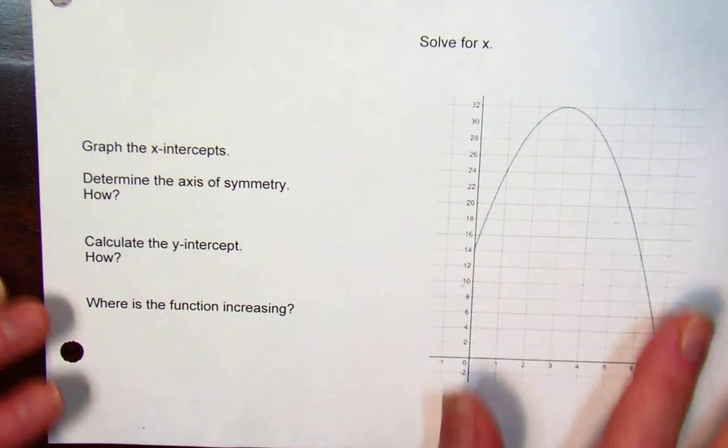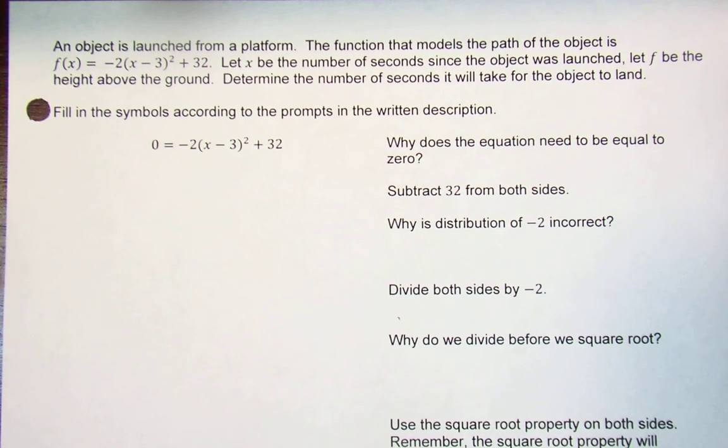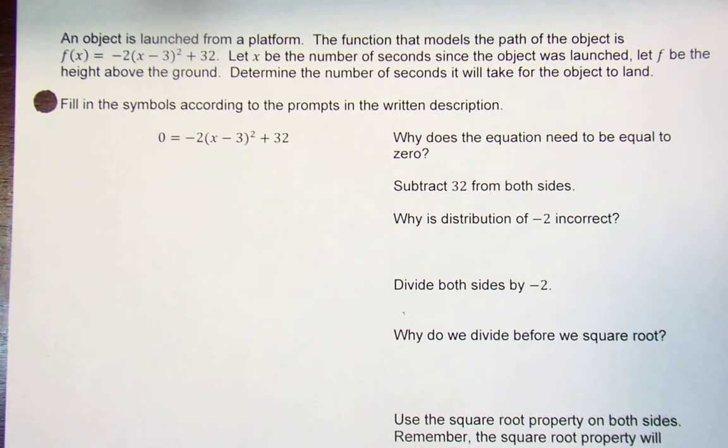An object is launched from a platform. The function that models the path of the object is f(x) = -2(x - 3)² + 32. Let x be the number of seconds since the object was launched, let f be the height in feet above the ground.